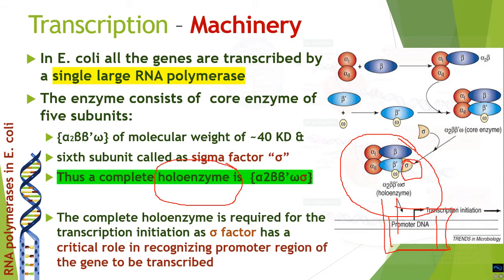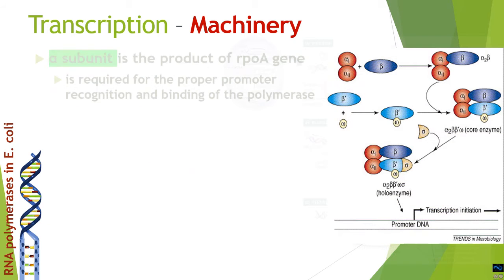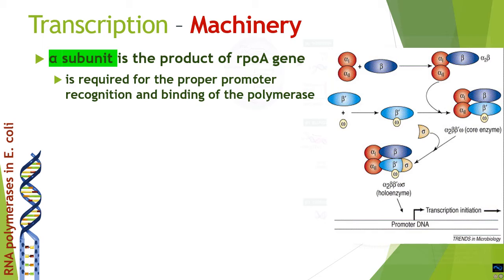The promoter region is an AT-rich region that must be identified so the polymerase binds and melts it. Without the sigma factor, the polymerase cannot recognize these promoter regions or has very low affinity for them. Therefore, the sigma factor is sometimes called the 'eye' of the RNA polymerase. Once initiation is complete, the sigma factor is lost from the holoenzyme, and the remaining pentamer carries out elongation.